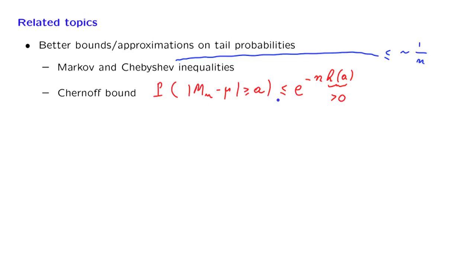However, this inequality requires some additional assumptions on the random variables involved. Another type of approximation on this tail probability can be obtained through the central limit theorem, which will actually be the next topic that we will be studying.